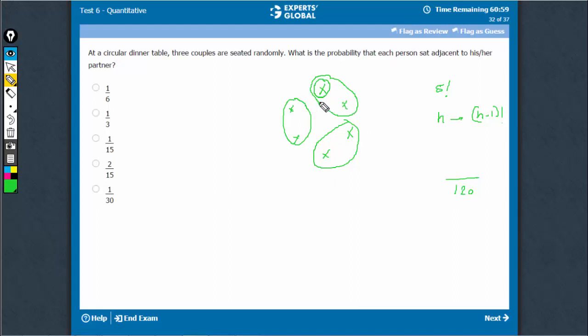3 elements can be shuffled in a circular arrangement in 2 factorial ways, and each couple can be shuffled among themselves in 2 factorial ways. There are 3 such couples, so 2 × 8 = 16 is the number of favorable cases.